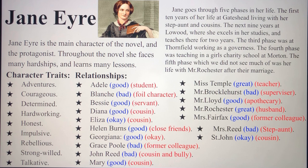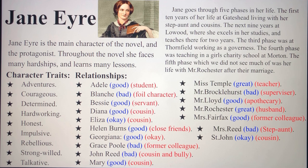Jane has always been hardworking — since day one, ever since she was a student she was top of her class. As a governess she put her full effort in with Adele, and as a mistress she always tried her best with her students. She's honest — remember when Rochester asked if she thought he was handsome and she said no. That also has to do with her impulsiveness: she constantly answered before thinking. She's also rebellious — despite having very strong morals, Jane always had that tide of rebelliousness. She's strong-willed and very talkative.